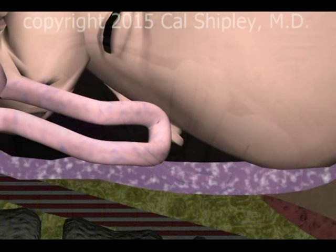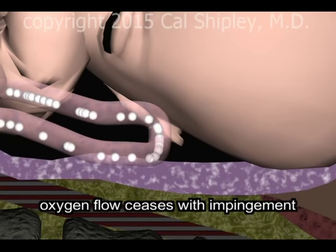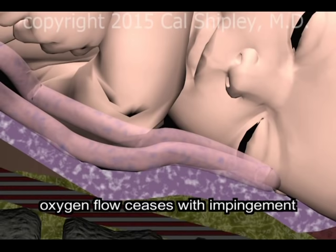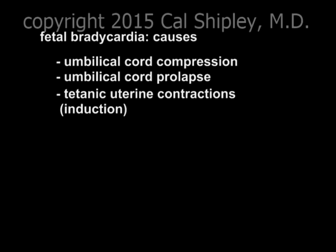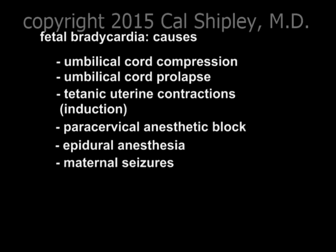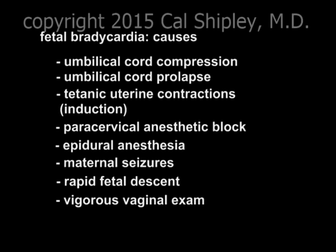The cord becomes trapped between the fetal head and the wall of the uterus, and with the progression of labor may become completely compressed, cutting off all oxygen flow to the fetus. Other causes of severe fetal bradycardia during labor include titanic uterine contractions — usually in association with induction of labor — paracervical anesthetic block, epidural and spinal anesthesia, maternal seizures, rapid descent of the fetus through the birth canal, and vigorous vaginal examination.